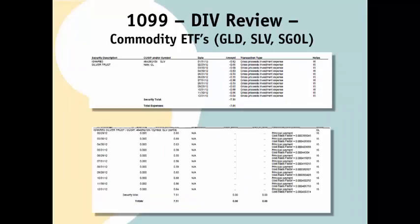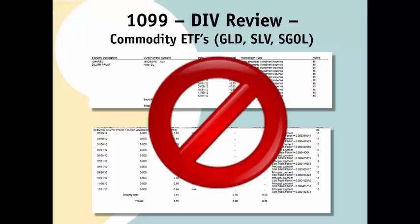Even more complex will be issues you face if you own commodity ETFs such as SLV or GLD. These are actually investments in a commodity — gold and silver — not in stock. Each month, some of the commodity is used to pay expenses, and these sales mean many calculations that must be made manually and many adjustments to your Bivio records. There are also manual adjustments to your tax forms that are required. Unless you are very comfortable doing calculations and making accounting entries, you will not want to deal with what's needed if your club invests in these.